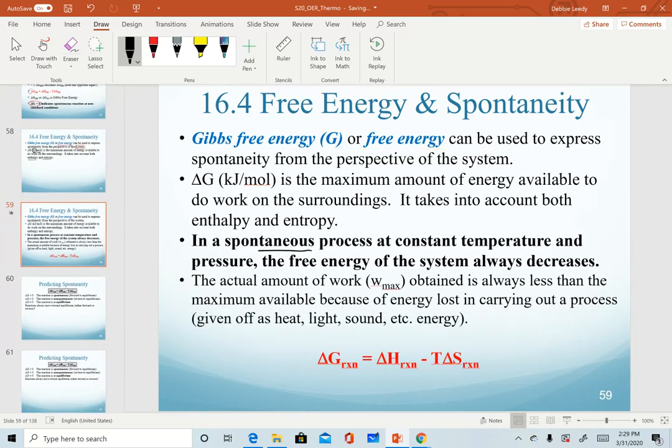In a spontaneous process at constant temperature and pressure, the free energy of a system will always decrease. If we look at Gibbs free energy from the perspective of work, we're trying to determine if a system is able to do work on the surroundings. The actual amount of work that is obtained is always going to be less than the maximum available. In any system, there is always some energy that is lost given off as heat, light, sound, or other types of energy.